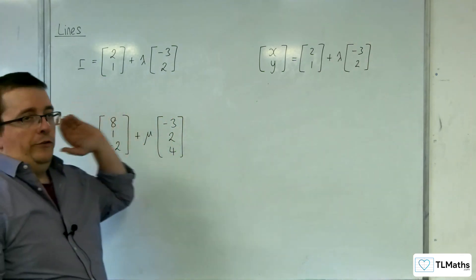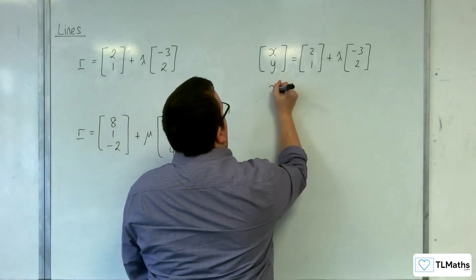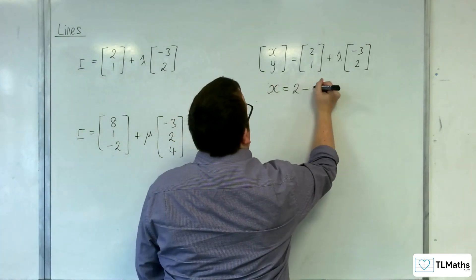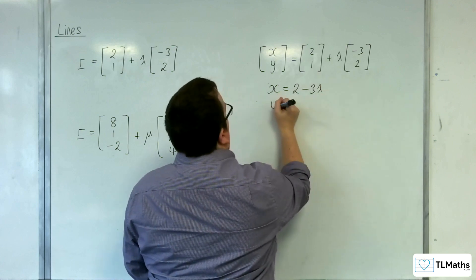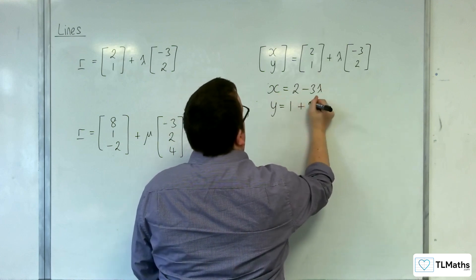So, we've got a top equation and a bottom equation. x equals 2 minus 3 lambda. y equals 1 plus 2 lambda.